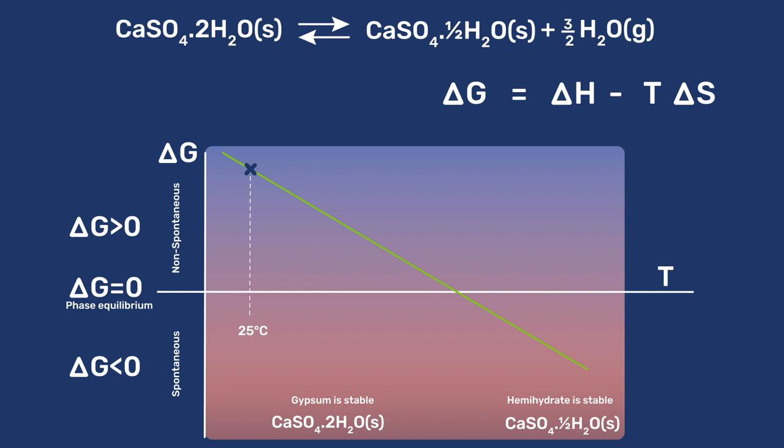The temperature for which delta G equals zero, and for which therefore phase equilibrium is reached, is obtained by rearranging this equation to give T equals delta H over delta S. This phase equilibrium temperature lies between 100 and 120 degrees Celsius, above which the decomposition becomes spontaneous. This is much easier to achieve than the 900 degrees Celsius required to produce quicklime.